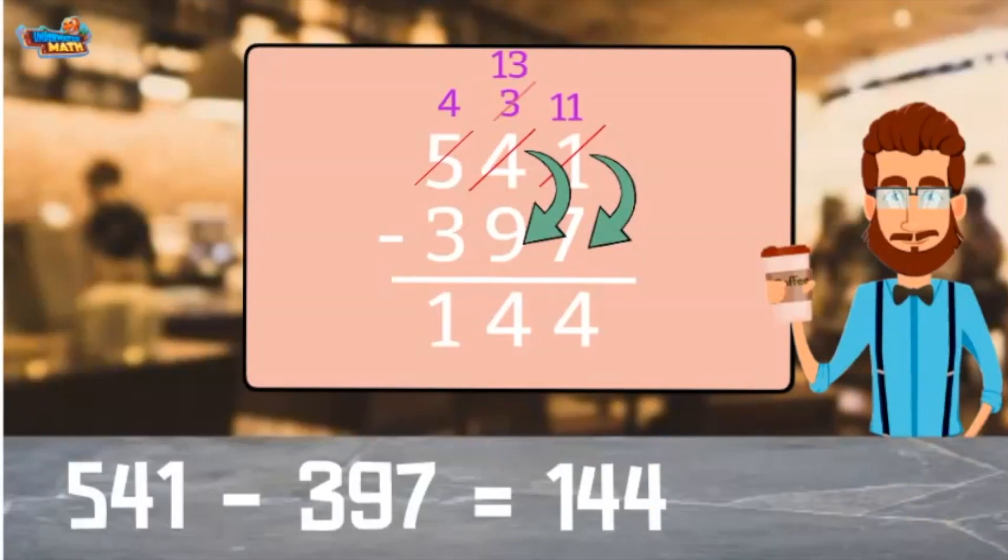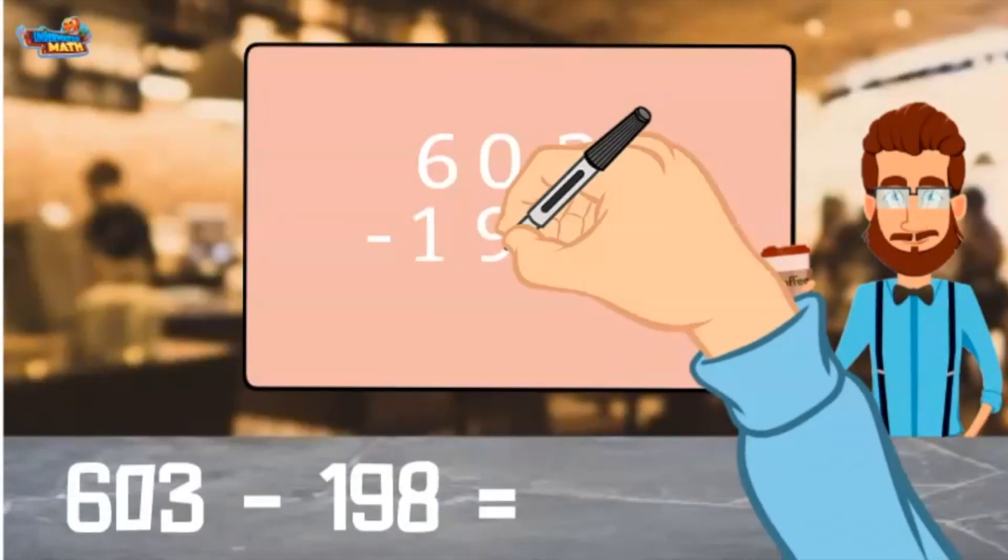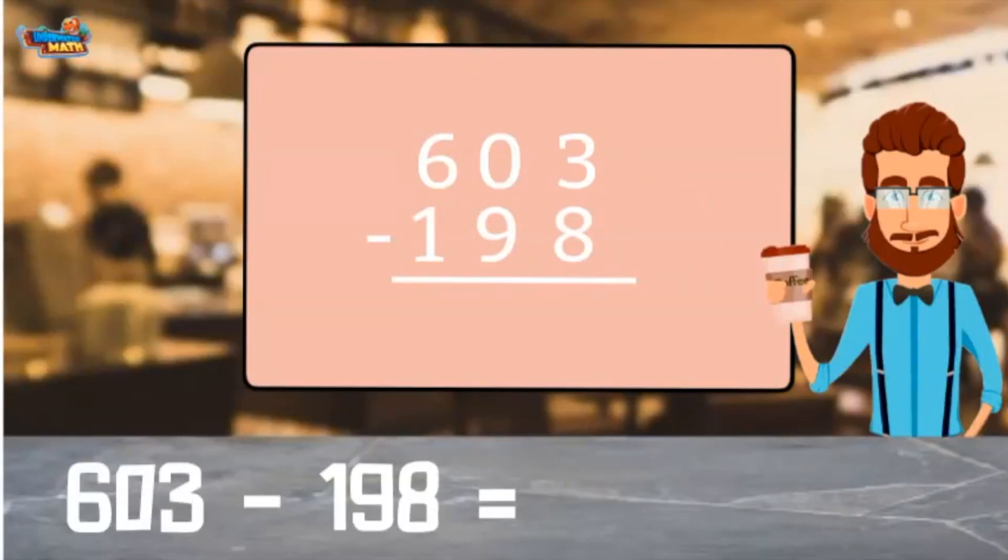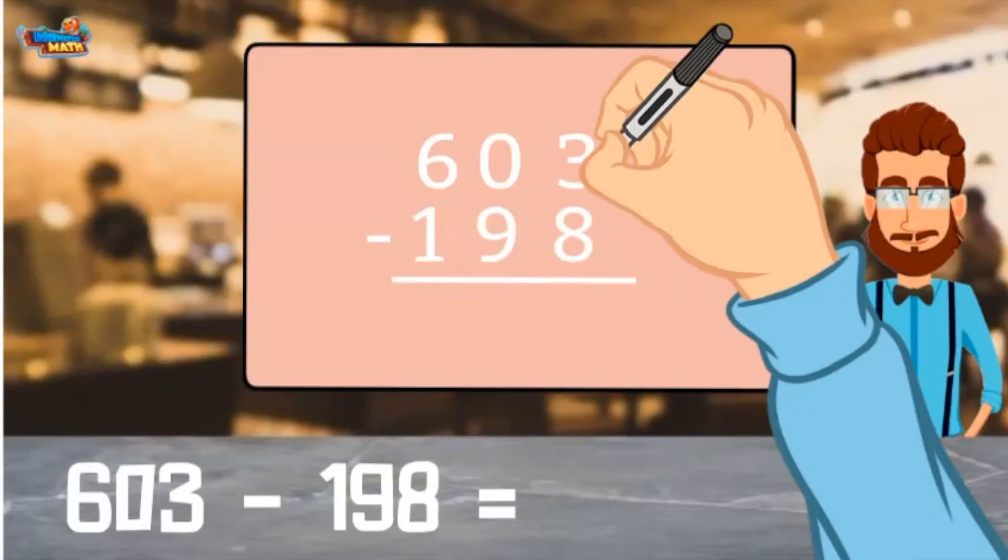Here's another example that may trip you up because you have to borrow across a 0. Start by stacking the numbers. I look to the ones place and see more on the floor, so I go next door.